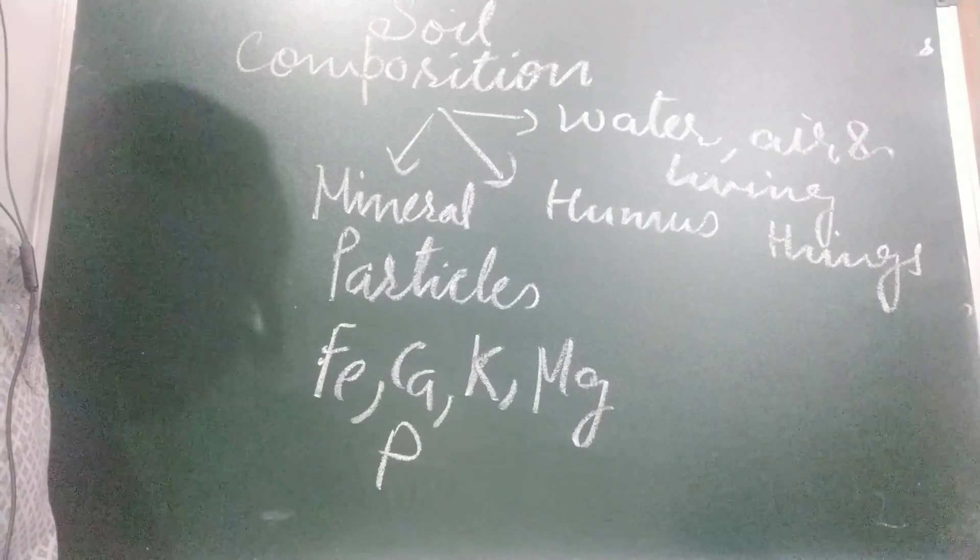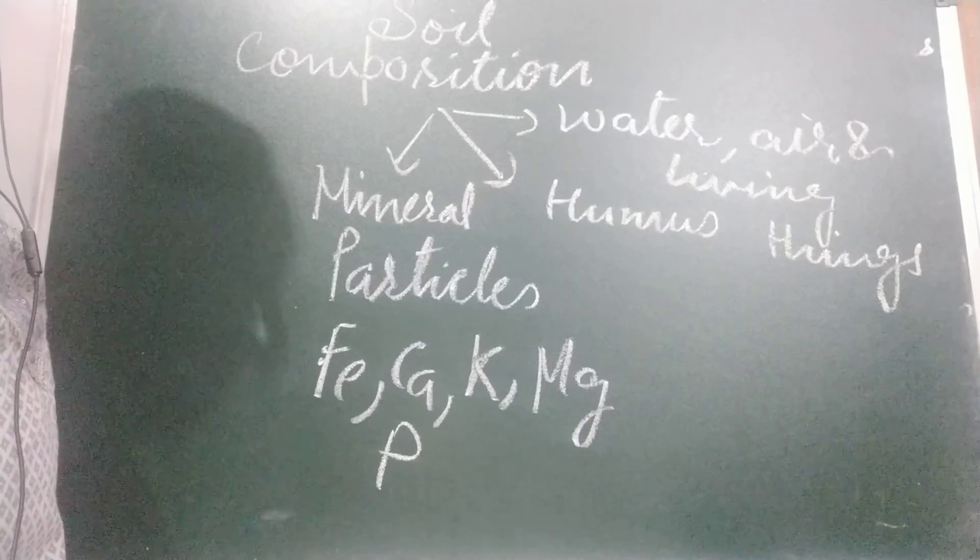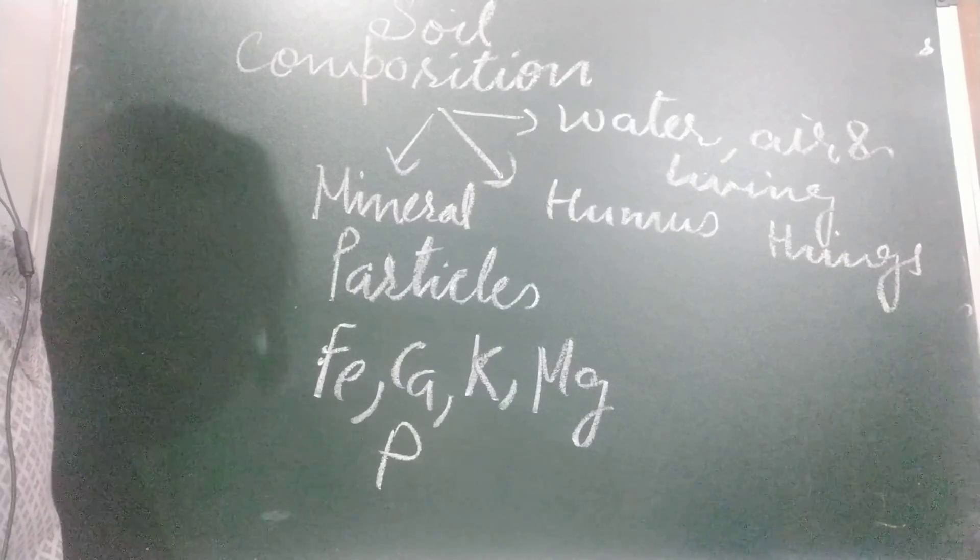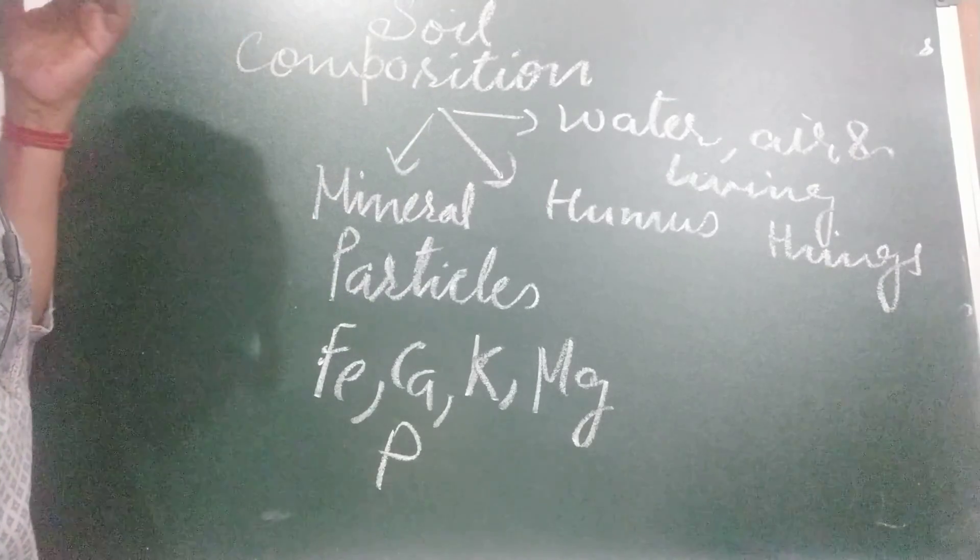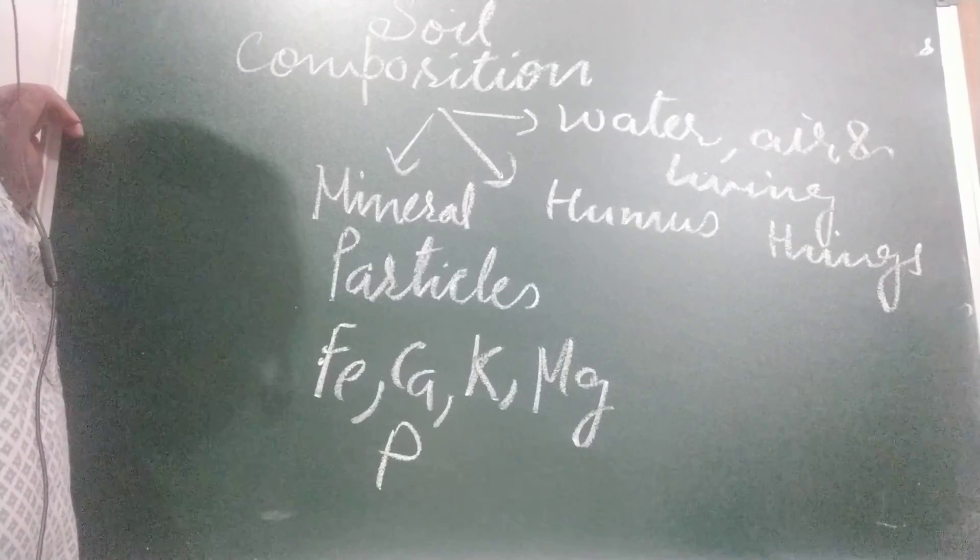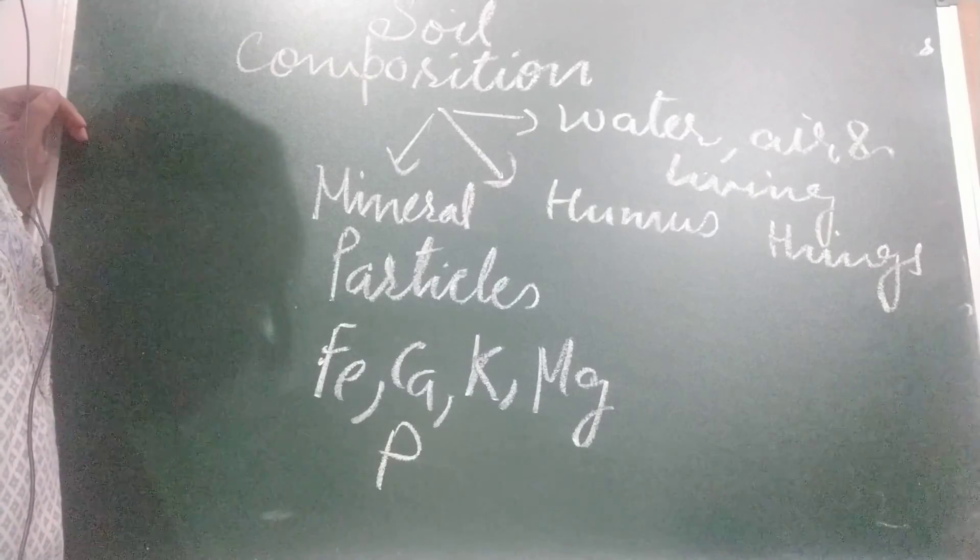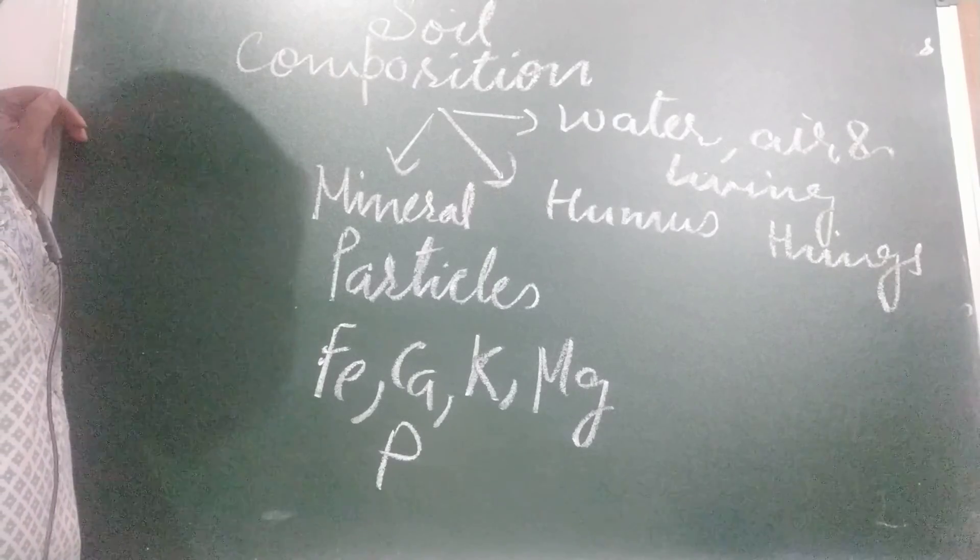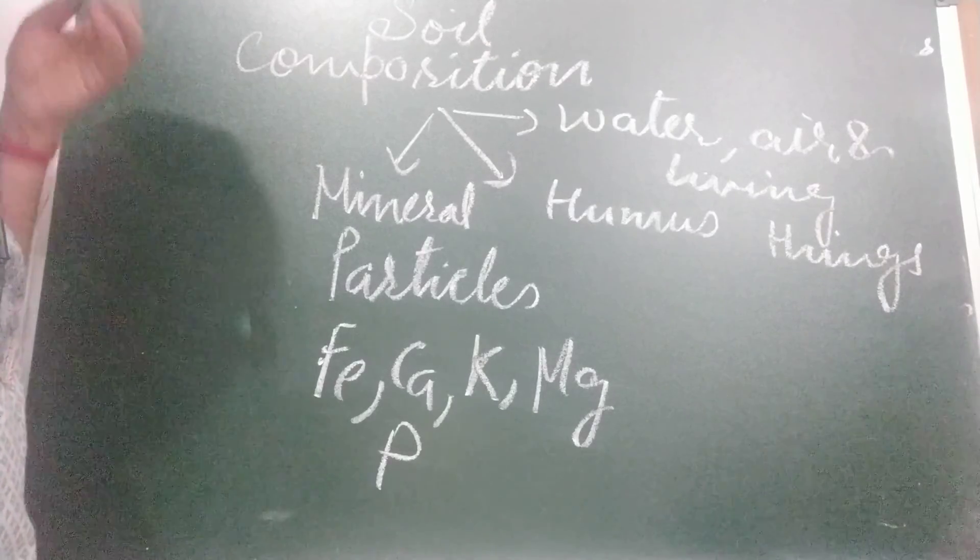Children, you know humus makes the soil fertile by providing organic nutrients. It also provides food to earthworm and other animals living in the soil. And also it improves the texture of the soil and prevents minerals being washed away by water.